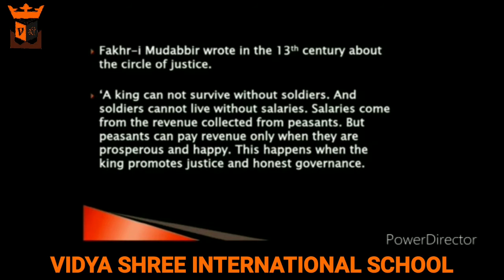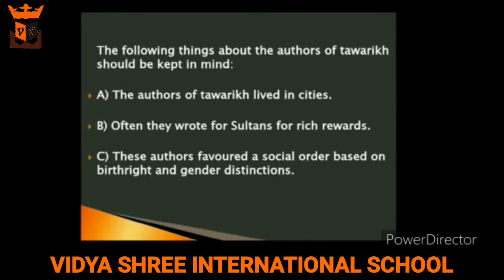In the circle of justice, Fakhr-e-Mudabbir wrote: a king cannot survive without soldiers, and soldiers cannot live without salaries. Salaries come from the revenue collected from the peasants. But peasants can pay revenue only when they are prosperous and happy. This happens when the king promotes justice and honest governance. So these Tawarikh were based on the principle of just rule.